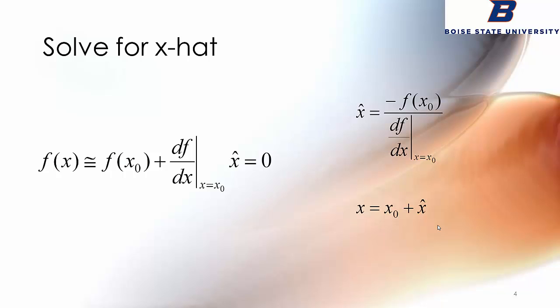Here I've got that approximation again. f(x) is approximated to f at x0 plus this slope times x hat. And of course, what we're trying to solve is the value of x for which f(x) equals 0. So we solve for x hat. x hat is negative of the function evaluated at x0 divided by that slope. Pretty straightforward. And then we can use that correction term to come up with an estimate of what the root is. So x now becomes x0 plus x hat.